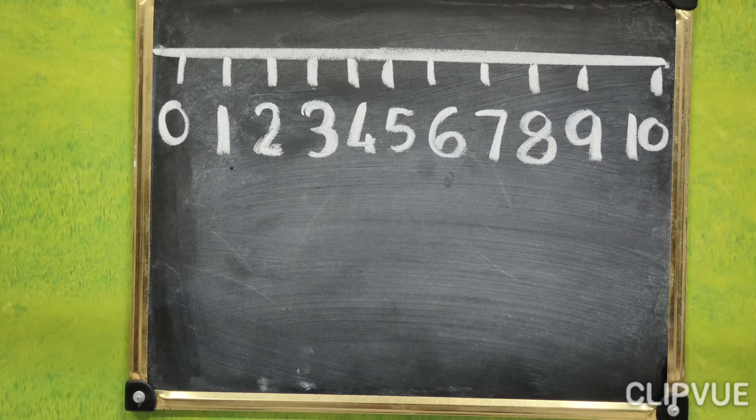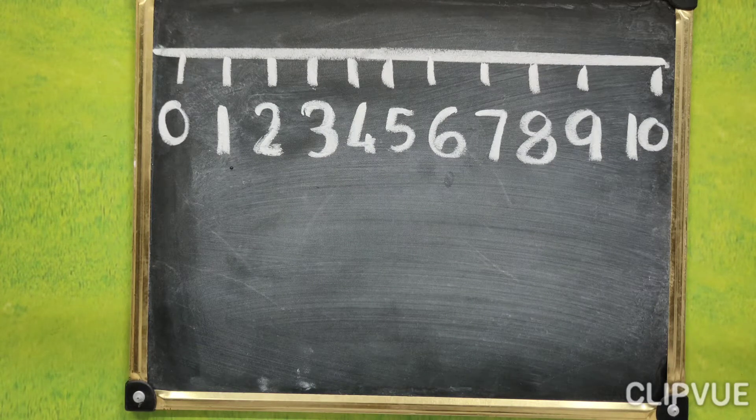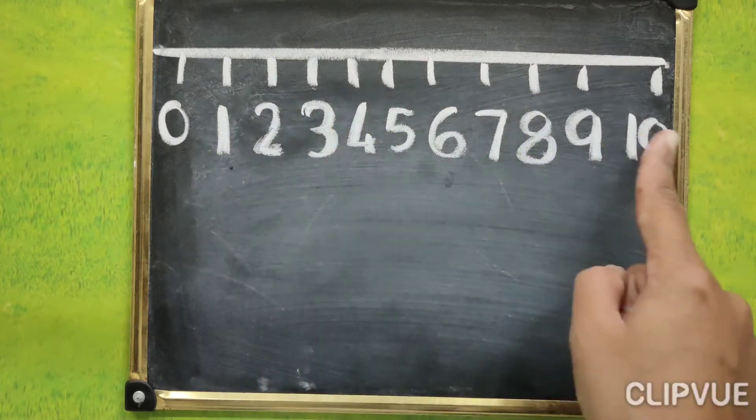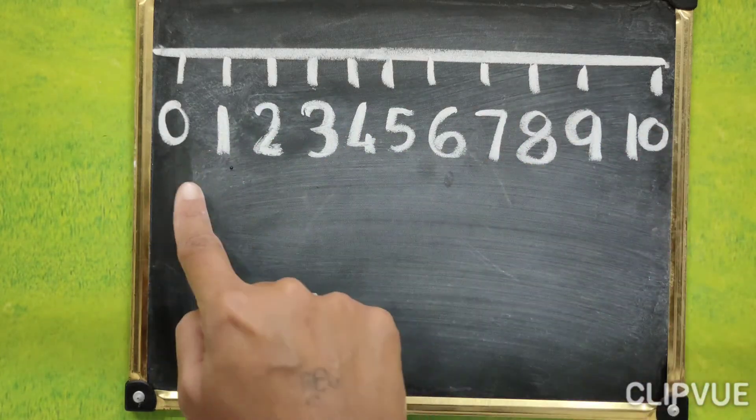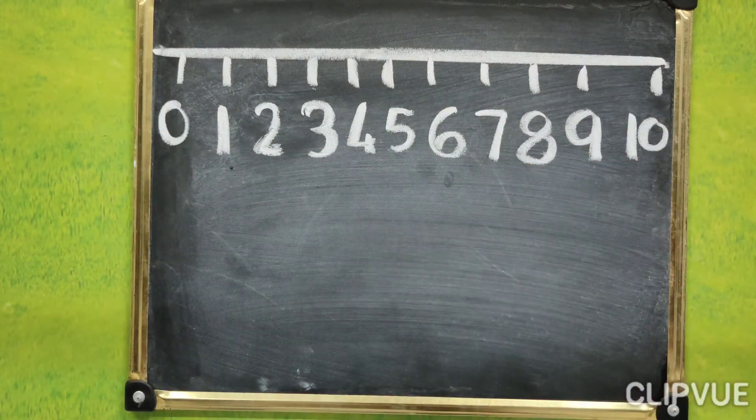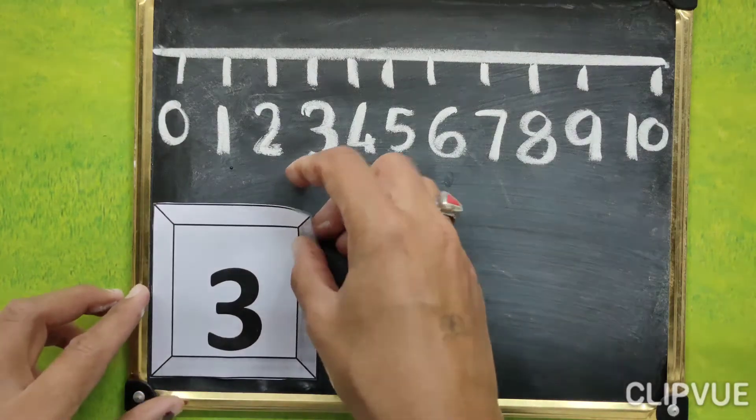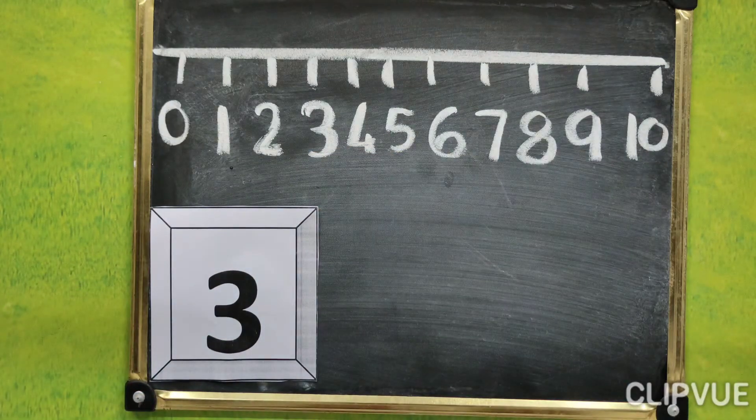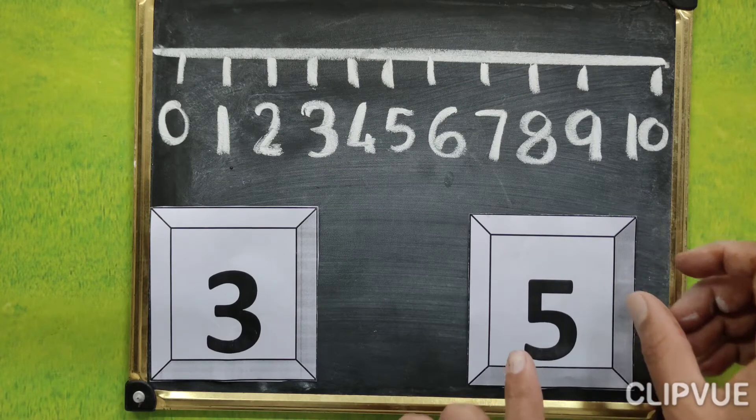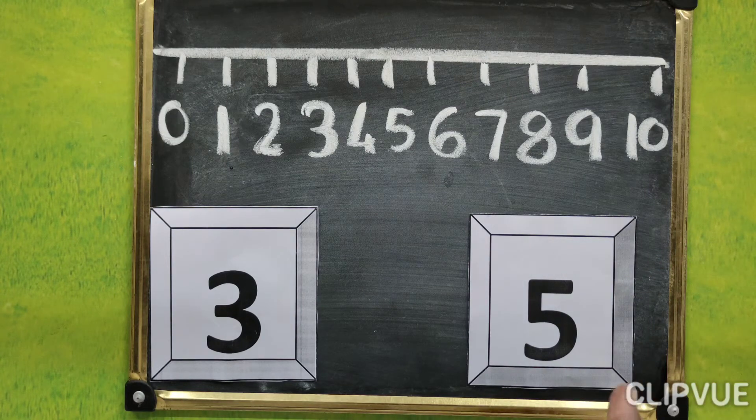So look it here. We draw number line, 0 to 10. Now you see two numbers. 3 and which number is this? 5. Which number is this? 5.